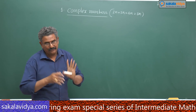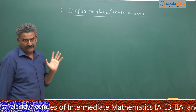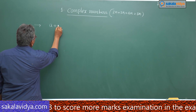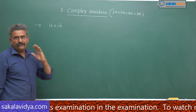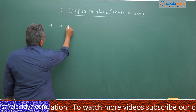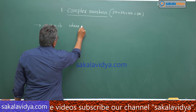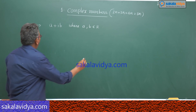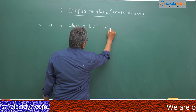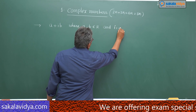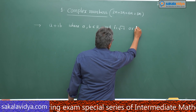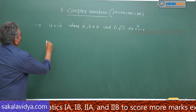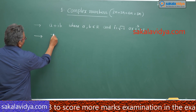Let us concentrate on complex numbers. What is a complex number? Generally, the complex number is in the form of a + ib. This is called a complex number. In this, a and b are both real numbers, and i is the imaginary unit, where i equals root of minus 1, or i squared equals minus 1. This complex number is denoted by the letter z.